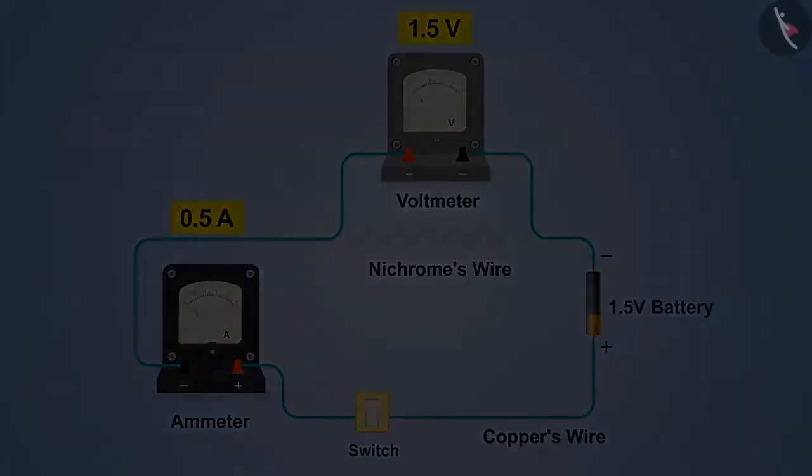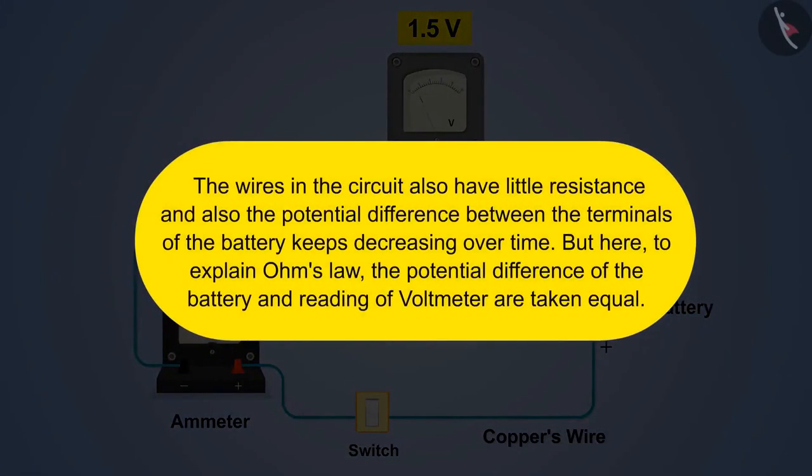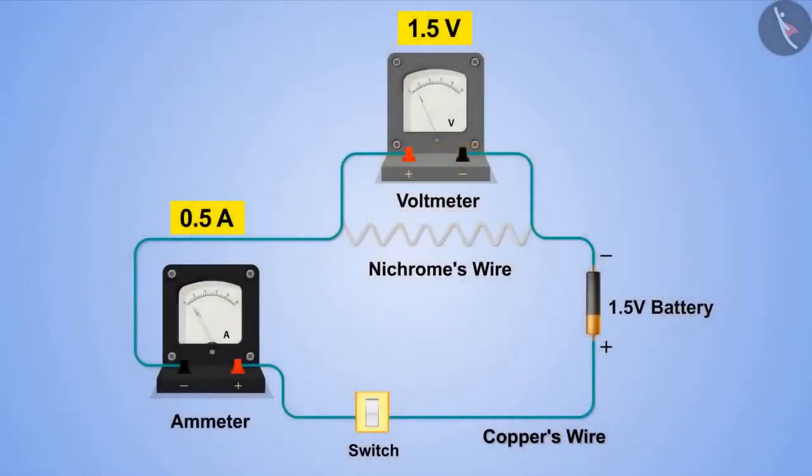One thing to note here is that wires in the circuit also have little resistance and also the potential difference between the terminals of the battery keeps decreasing over time. But here to explain Ohm's law, the potential difference of the battery and the reading of the voltmeter are taken equal. Do the same process four times and increase one battery each time in the circuit.